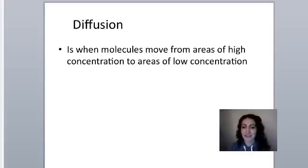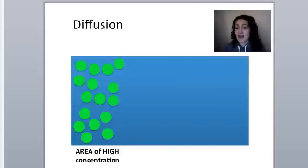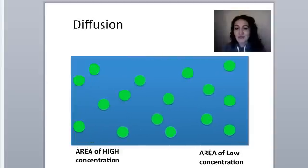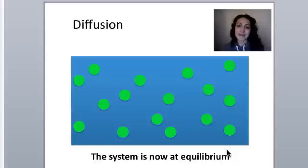Let's look at an application. Imagine an aquarium tank — this is a cartoon of one. You poured some dye at one end so that the dye is really concentrated at that end, an area of high concentration. The other end has low concentration because you didn't put any dye there. Over time, those molecules are going to spread apart, moving from high concentration to low concentration. That's simple diffusion.